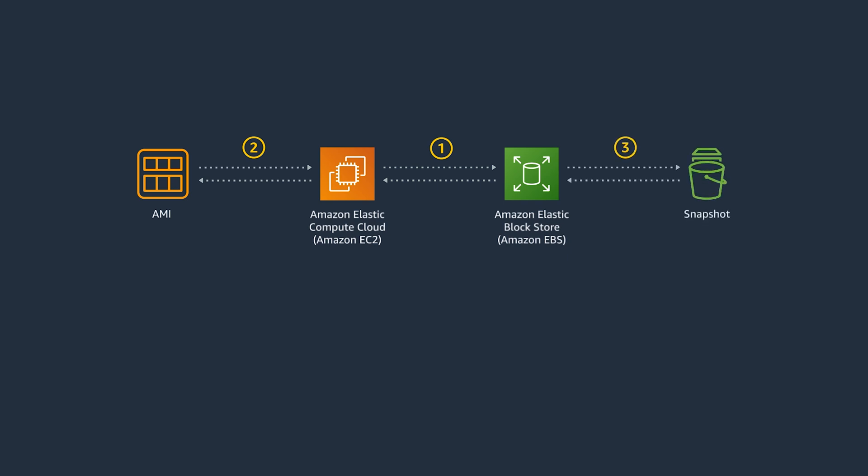Number three, you ensure that your architecture addresses point-in-time recovery of EBS volumes for disaster recovery, data migration, and for backup compliance. So you take backups of these EBS volumes called EBS snapshots and store them in S3. The snapshot contains all of the required information needed to restore your data to a new EBS volume.